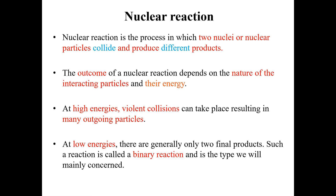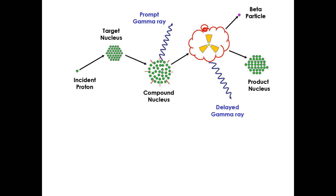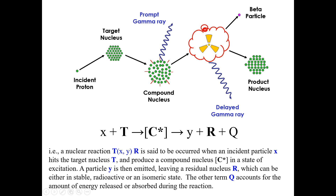A reaction with only two final products is called a binary reaction, and it is the type we will mainly discuss in this lecture. As you can see in the figure, it is a typical description of a nuclear reaction.